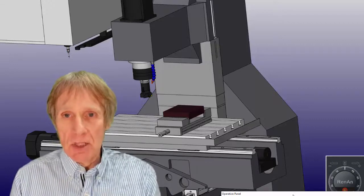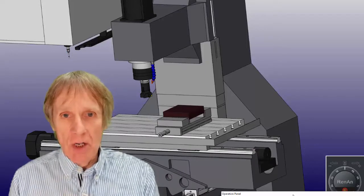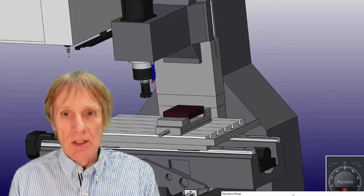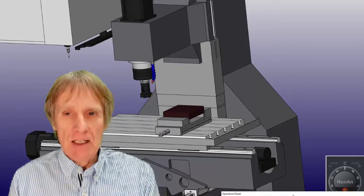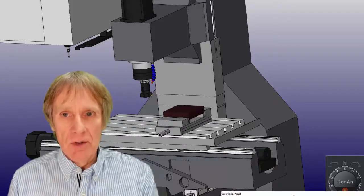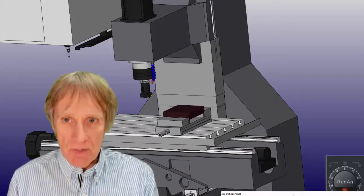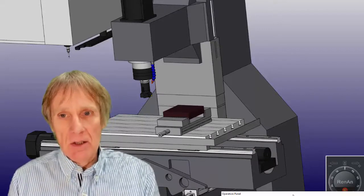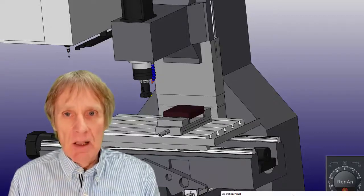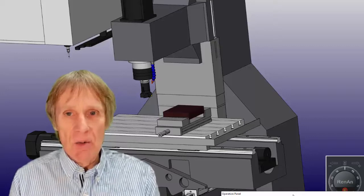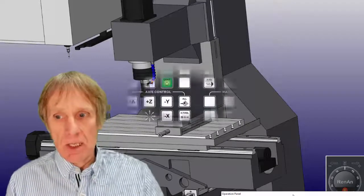The only other thing you may have to do when you switch a machine on is reference the tool changer. There's like a drum with all the tools in, and it rotates this drum and finds its number one tool. You'd have to read your manuals on this, but you'd probably have to press the turret index button or something like that, and it will index around, find its first tool, and say, 'Yeah, I know where that is as well.' So I'm going to zero return this machine now.